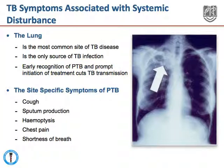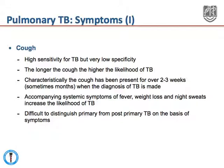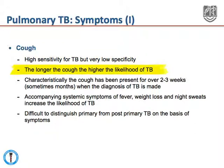The specific symptoms of pulmonary TB include cough, sputum production, hemoptysis, chest pain, and shortness of breath. Although cough is a very common symptom of tuberculosis, it is a very nonspecific symptom — it occurs in many other diseases of the lung. In tuberculosis, the longer the cough has been present, the higher the likelihood that it could be due to TB.